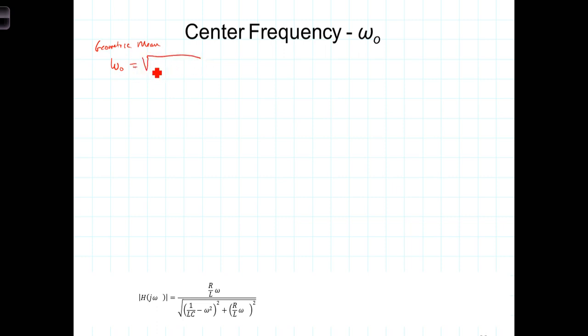The geometric mean is the square root of the product of the two values, omega-C1 times omega-C2. Now, an arithmetic mean is the average value of omega-C1 and omega-C2. It's the value that is halfway between those two values. That's the arithmetic mean.